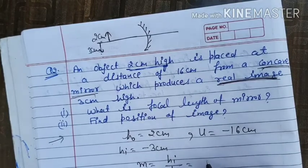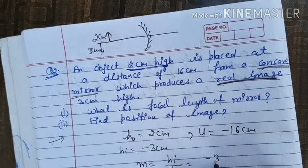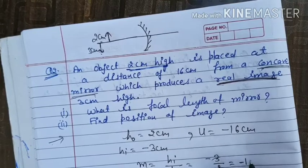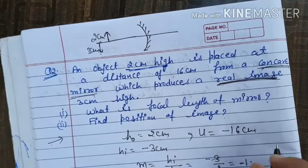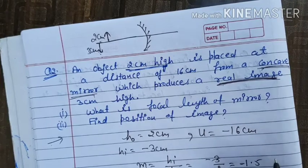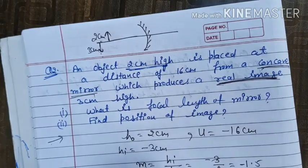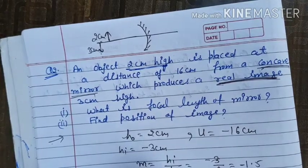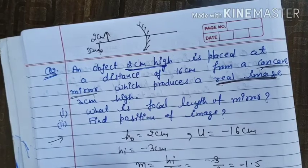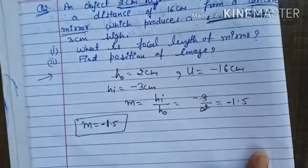First step: find magnification. m = hi/ho = −3/2 = −1.5. So our magnification value is minus 1.5.